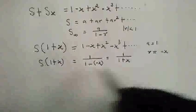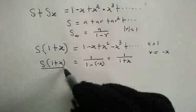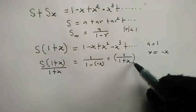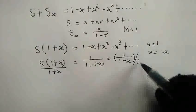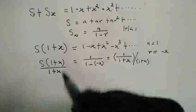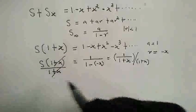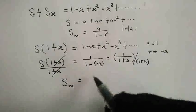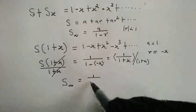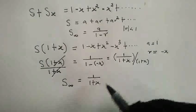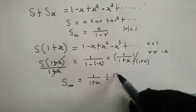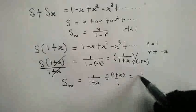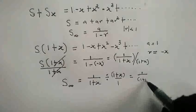So, here, we divide both sides by 1 plus x. Here, 1 plus x, and everything here, we divide by 1 plus x. So, we get sum to infinity of that series is equal to 1 all over 1 plus x divided by 1 plus x.